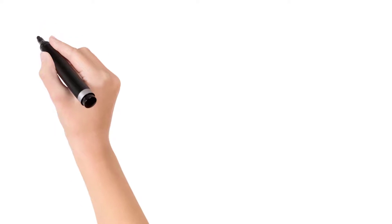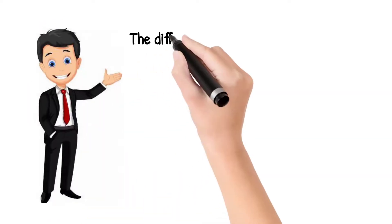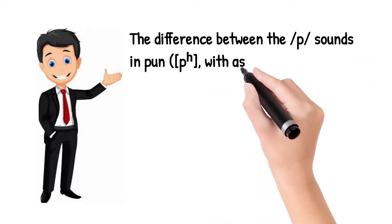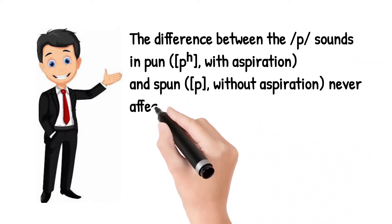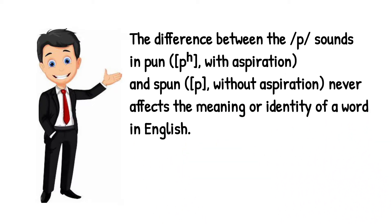Now let's look at the example of a phone. The difference between the /p/ sounds in 'pun' — with aspiration — and 'spun' — without aspiration — never affects the meaning or identity of a word in English. We have two words: 'pun' and 'spun'. The /p/ sound is aspirated in 'pun' and unaspirated in 'spun'.